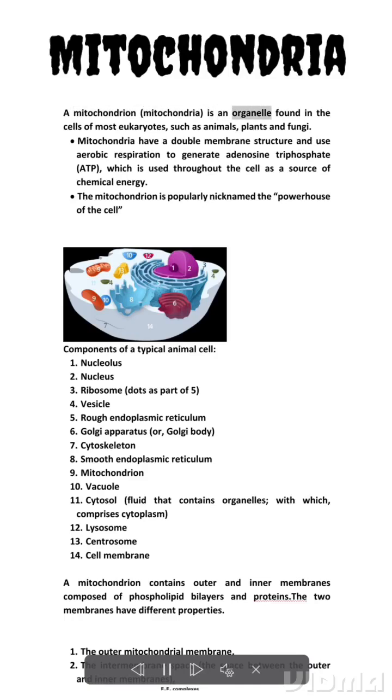A mitochondrion (mitochondria) is an organelle found in the cells of most eukaryotes, such as animals, plants, and fungi. Mitochondria have a double membrane structure and use aerobic respiration to generate adenosine triphosphate (ATP), which is used throughout the cell as a source of chemical energy.